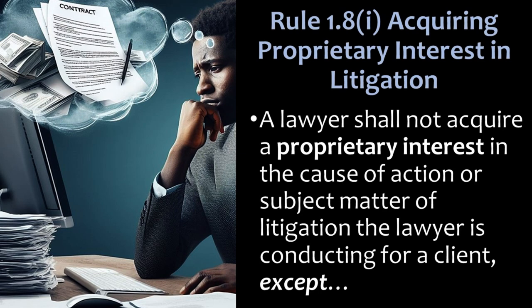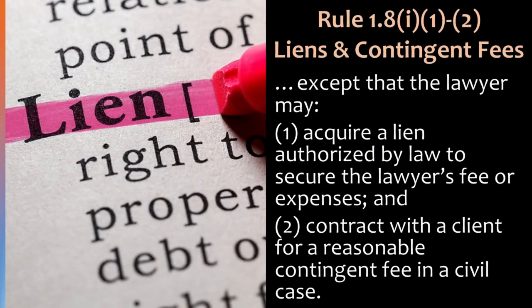Except — and we're going to have two big exceptions. First, the lawyer may acquire a lien authorized by law to secure the lawyer's fee or expenses, and two, the lawyer may contract with a client for a reasonable contingent fee in a civil case.